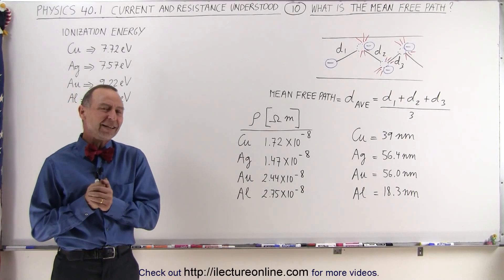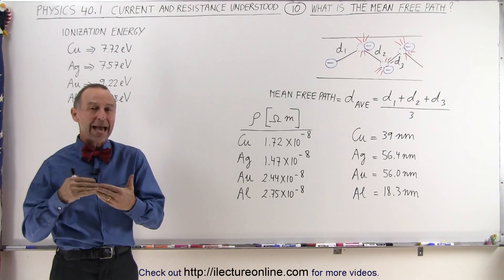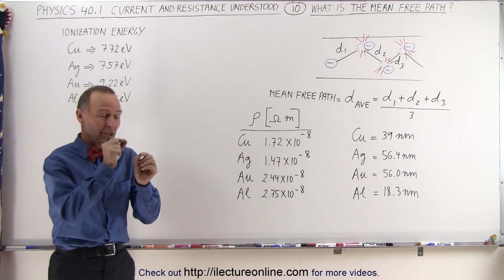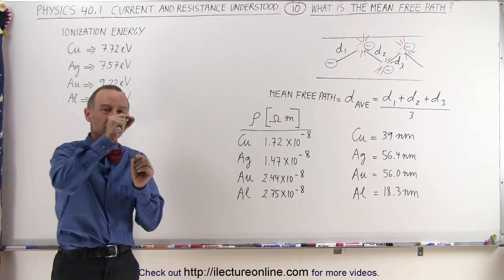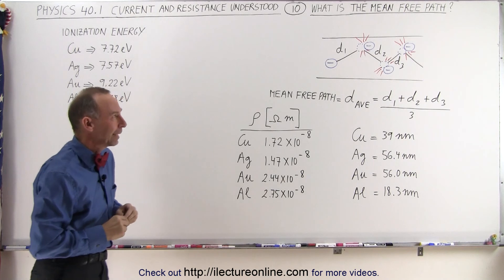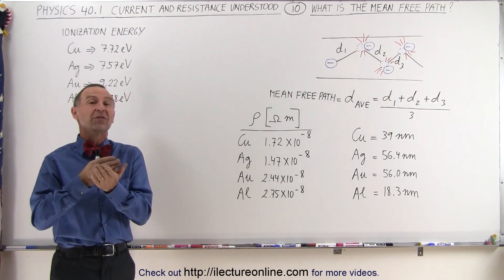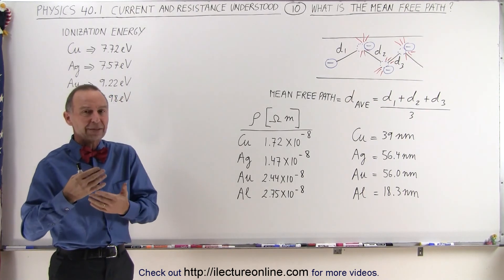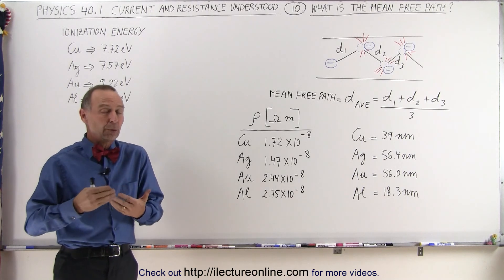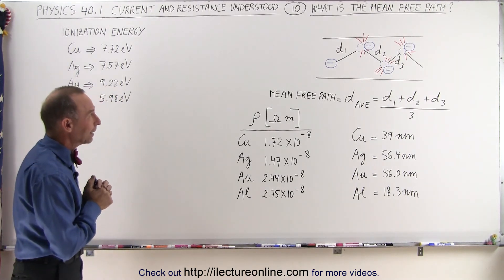Welcome to ElectronLine. Now let's talk about the mean-free path, and we mean the mean-free path between collisions of the electrons moving through the conductor. And it's one of the major reasons why a conductor will have either a high or low resistivity or a high or low conductivity, whichever way you want to look at it.